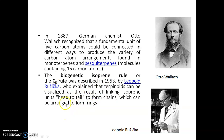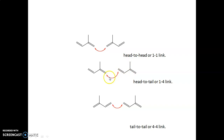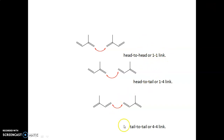However, that head-to-tail arrangement is not always true — several other arrangements can be possible. Isoprene units can form head-to-head or tail-to-tail linkages as well. A fourfold linkage can be possible to form oligomers of these isoprene units in the form of monoterpenoids, sesquiterpenoids, diterpenoids, and triterpenoids. However, these biogenetic rules are not always applicable for cyclic compounds and several other terpenoids, and these represent exceptions to the biogenetic isoprene rule.